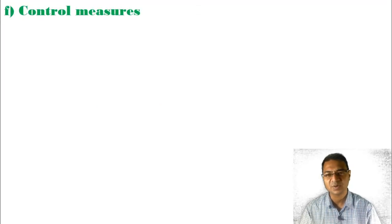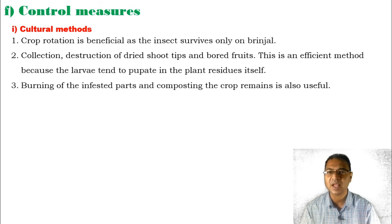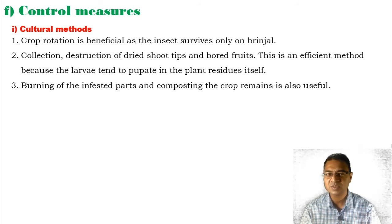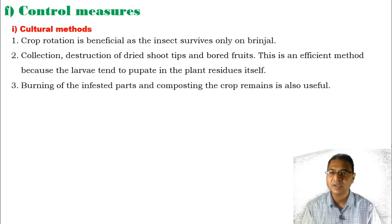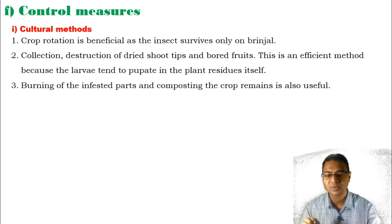Now the control measures. A number of techniques are used to control this type of pest. The first is the cultural method. Crop rotation is beneficial as the insect survives only on brinjal. Collection and destruction of dried shoot tips and bored fruits is also effective because larvae tend to pupate in plant residues. Burning of infested parts and composting crop remains are also useful techniques.